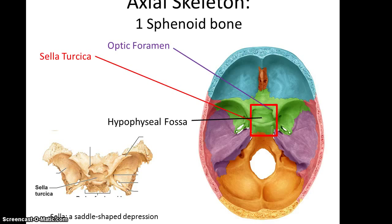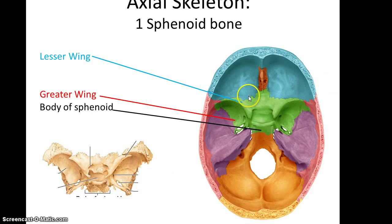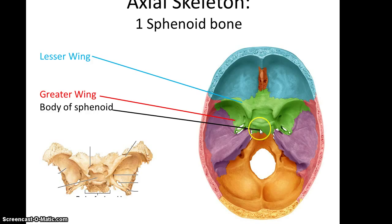If you pop the top of the skull off and look down, you see that the sphenoid bone has a large area referred to as the sella turcica. In the middle of the sella turcica is the hypophysial fossa, or depression. Also within the sella turcica is the optic foramen, one on each side. There is also the lesser wing of the sphenoid bone, one on each side, the greater wing, again one on each side, and then the body of the sphenoid bone. Some people say the sphenoid bone looks kind of like a butterfly or a bat from this view.